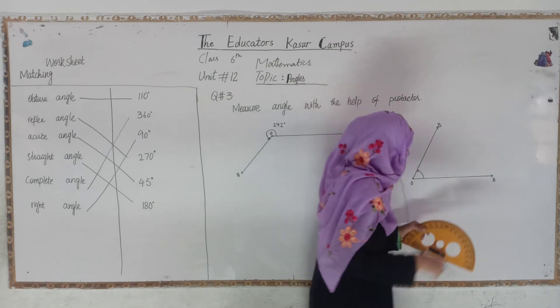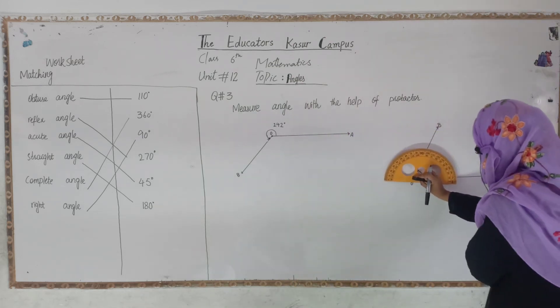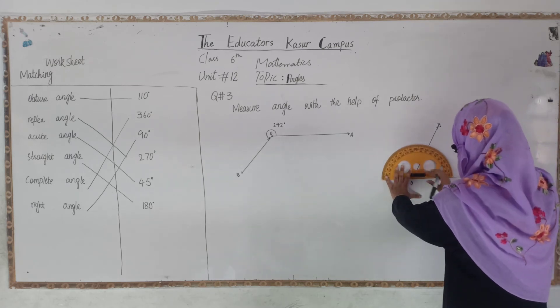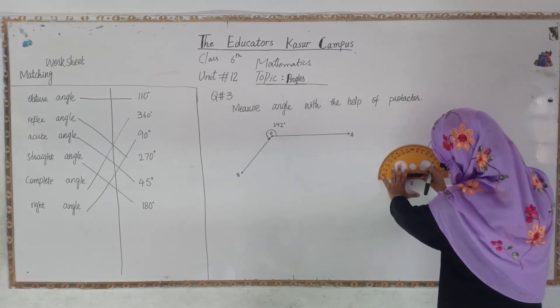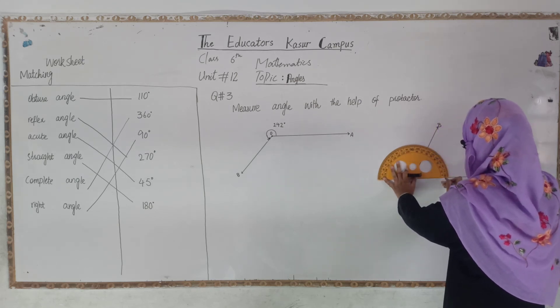We will also measure the other angles. First of all, you will keep the protractor in this way, in the center. After that, you will see your second arm, where is it?